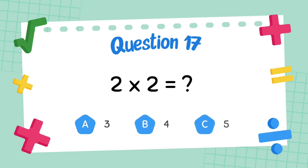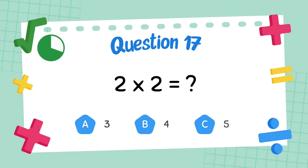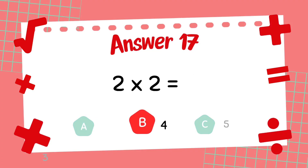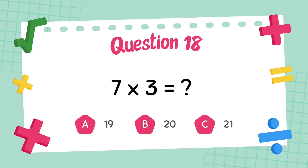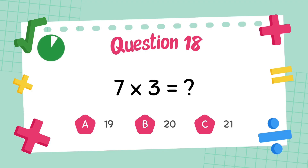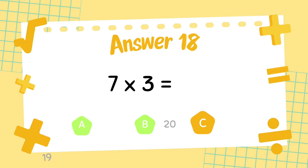What is 2 multiply 2? The answer is 4. What is 7 multiply 3? The answer is 21.